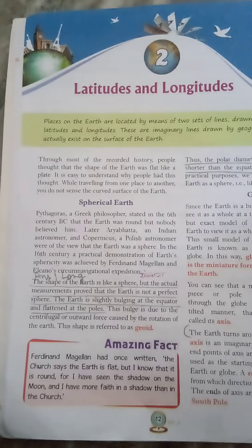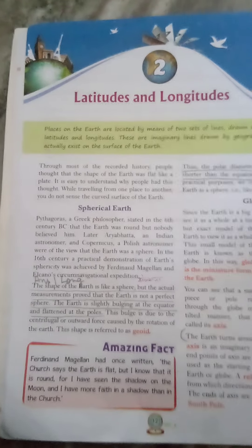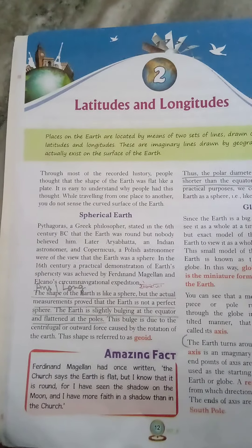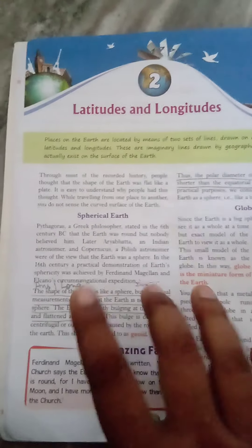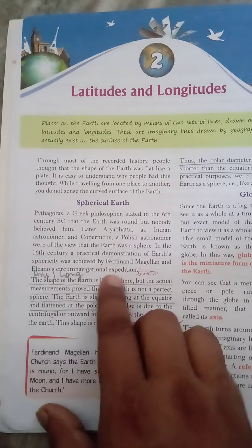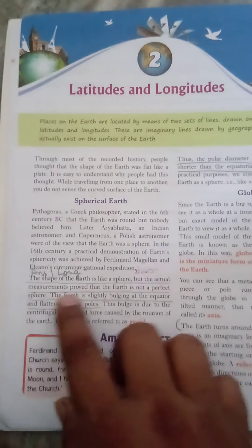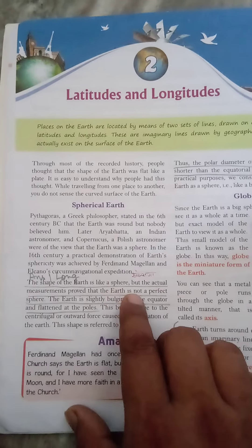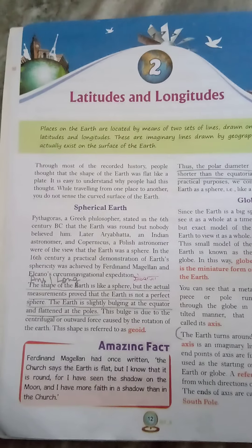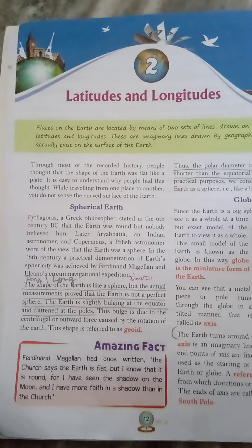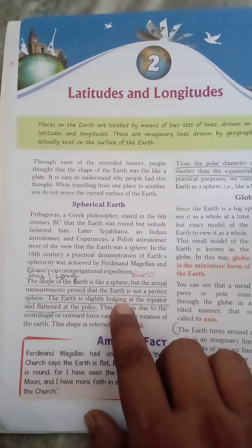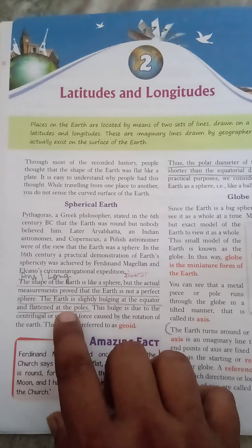This also confirmed the shape of the Earth as a sphere. However, the actual measurement shows that the Earth is not a perfect sphere. The Earth is bulged at the equator and flattened at the poles.